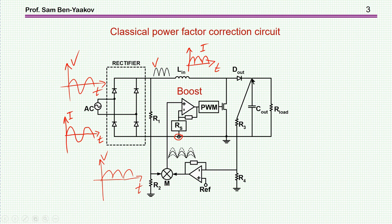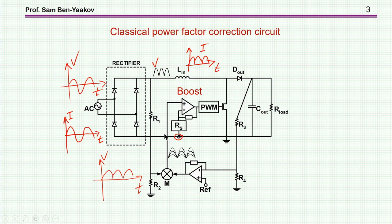There is a feedback from the output which is compared by this error amplifier to stabilize the output. We have a reference coming from here — a positive waveform with a sinusoidal wave shape. This is used as a reference, which is then multiplied by the error signal to produce the signal fed to this feedback loop, which measures the current and has this reference.